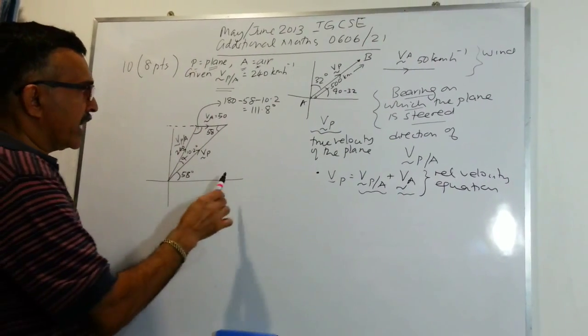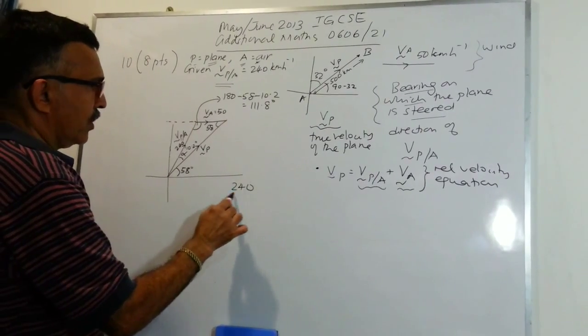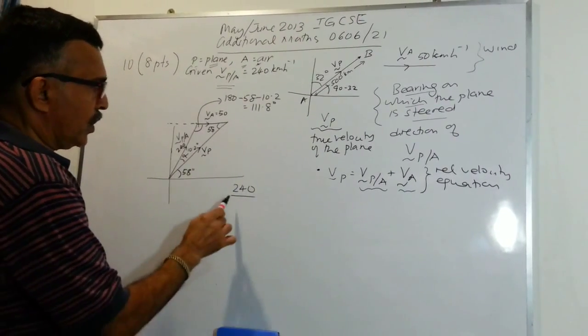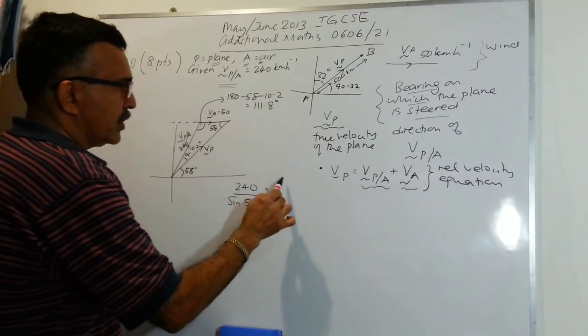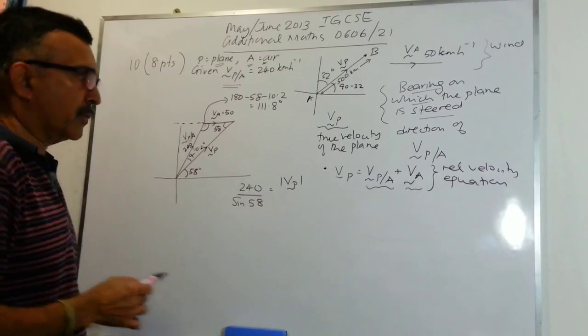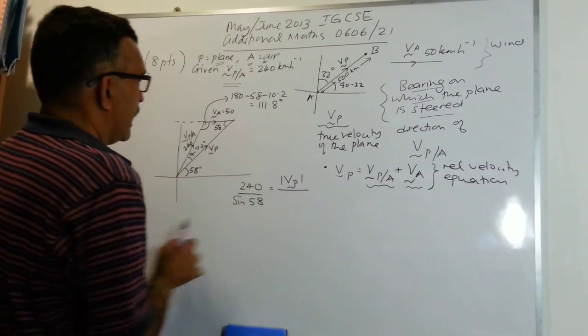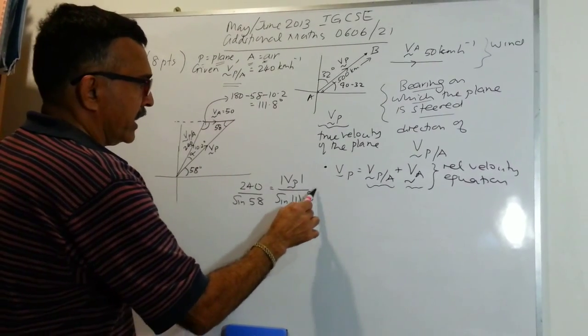Using the sine rule again, we can write 240 over sine 58 equals the magnitude of the velocity of the plane over sine 111.8 degrees.